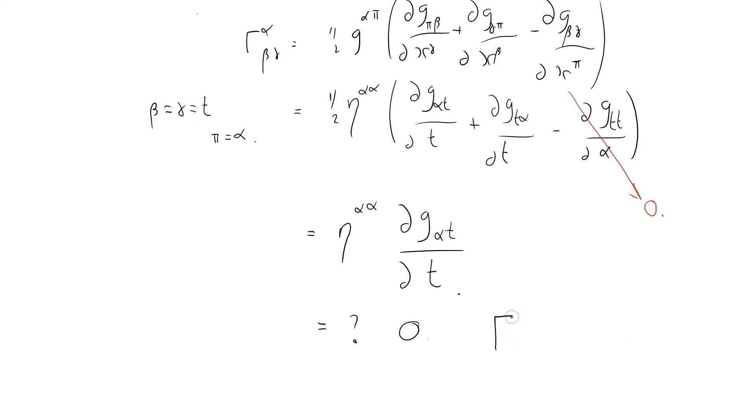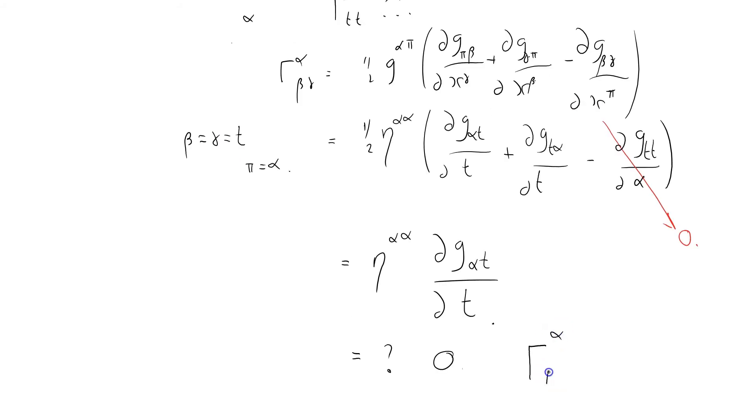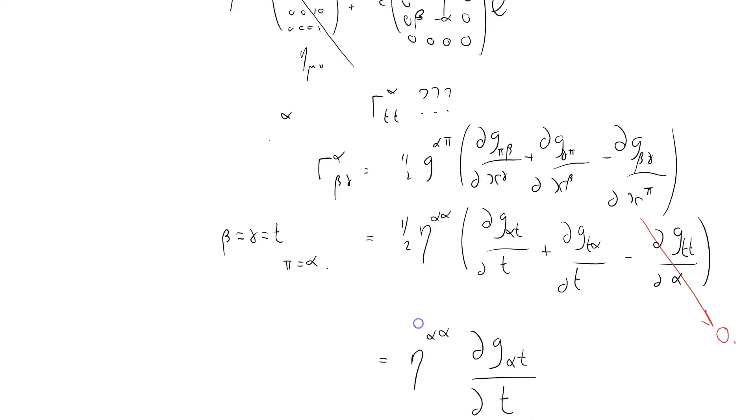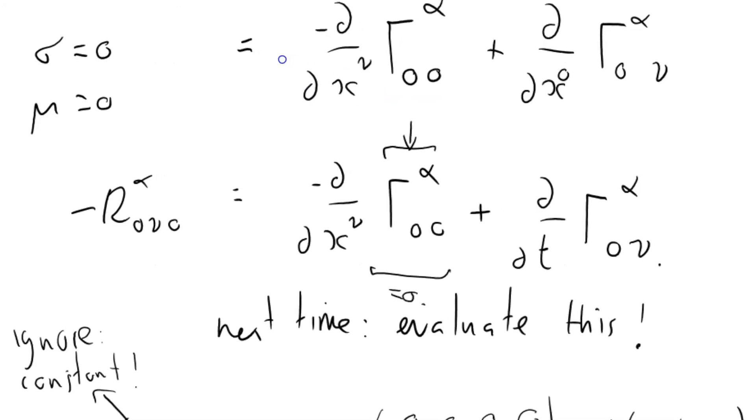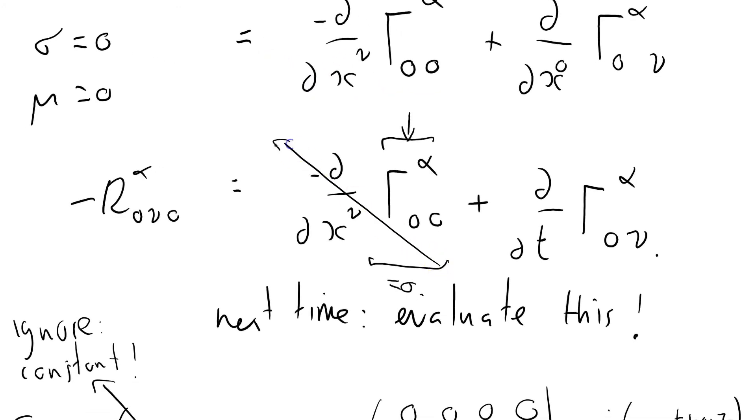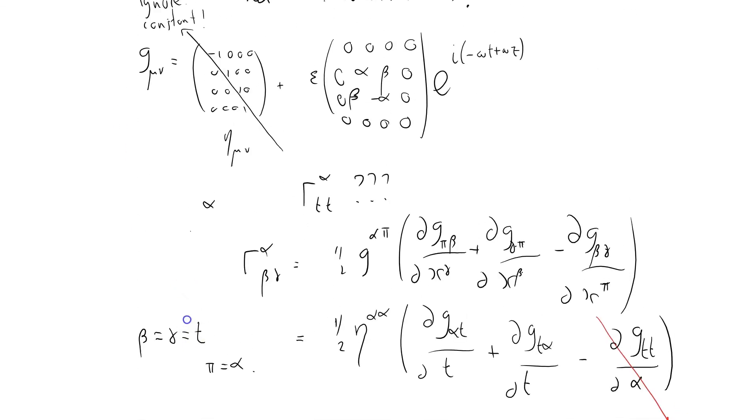So that tells us altogether that the Christoffel symbol Γ^α_{tt} equals zero. Well, that's nice! So that tells me that this term here equals zero. That's wonderful. I can cross that term out. The Christoffel symbol itself is zero, let alone its derivative.